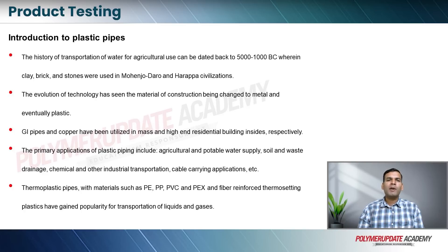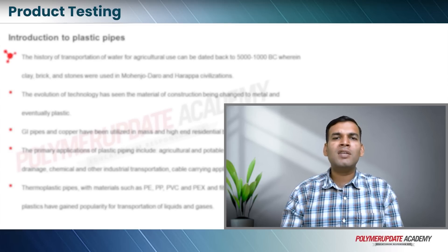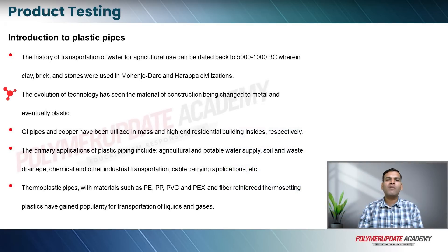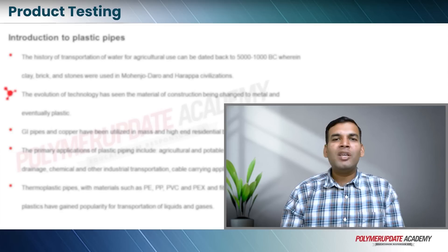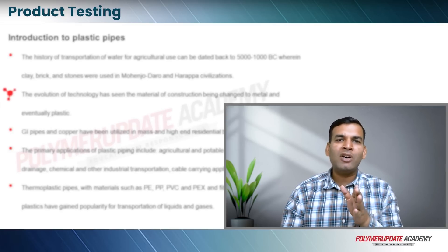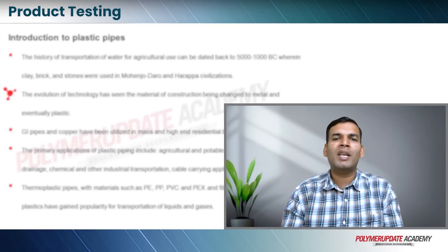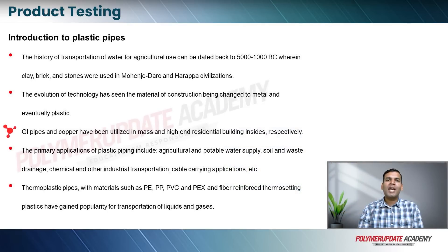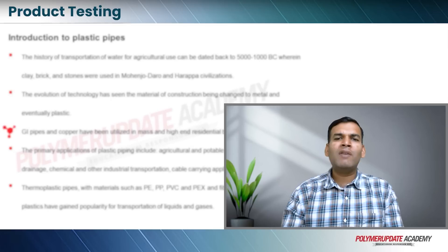Let us look at the introduction to piping. The history of transportation of water for agricultural use can be dated back to 5000 to 1000 BC, wherein clay, bricks, and stone were used in Mohenjo-daro and Harappan civilizations. The evolution of technology has seen the material of construction change to metal and eventually plastic. Humankind passed from the stone age to the metal age, and today we are in the plastic age, also known as the non-metallic age. GI pipes and copper have been utilized in mass and high-end residential buildings respectively.